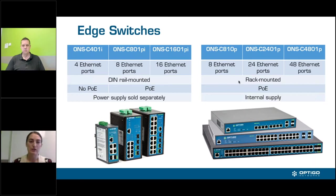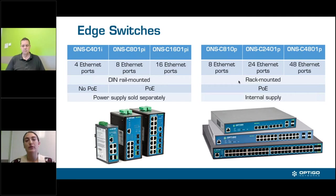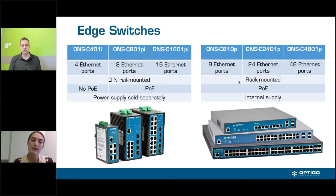We need to figure out which edge switches to choose. We have six different edge switches, and there are four main things to consider. First, how many ports — how many devices can you connect? We have four, eight, sixteen, twenty-four, and forty-eight port switches. Second, mounting: three are DIN rail mounted — industrial ruggedized switches, great for panels — and three are rack mounted, which fit well into a standard IT setting with a rack or IT room. Third, PoE (Power over Ethernet) — all but one of our switches uses PoE, so if you need PoE you won't be able to use the four-port.